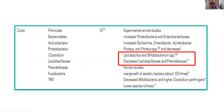Here we can see what happens in CKD patients usually. The number of symbionts — the beneficial microorganisms — goes down. And usually the number of harmful bacteria goes up. It has been seen in human studies that overgrowth of aerobic bacteria becomes 100 times more in patients with CKD and ESRD compared to the normal population.